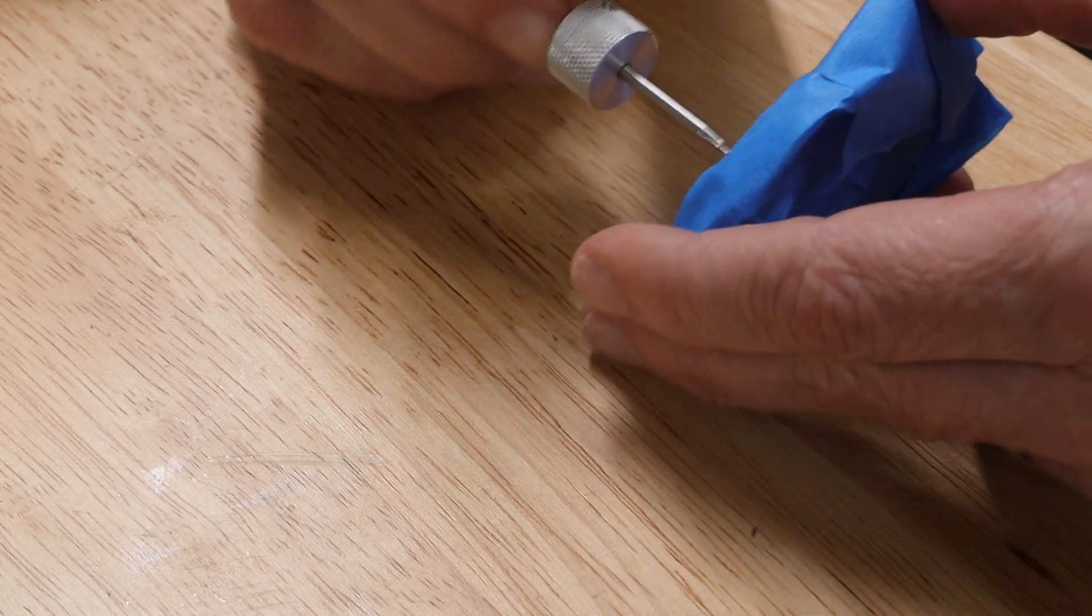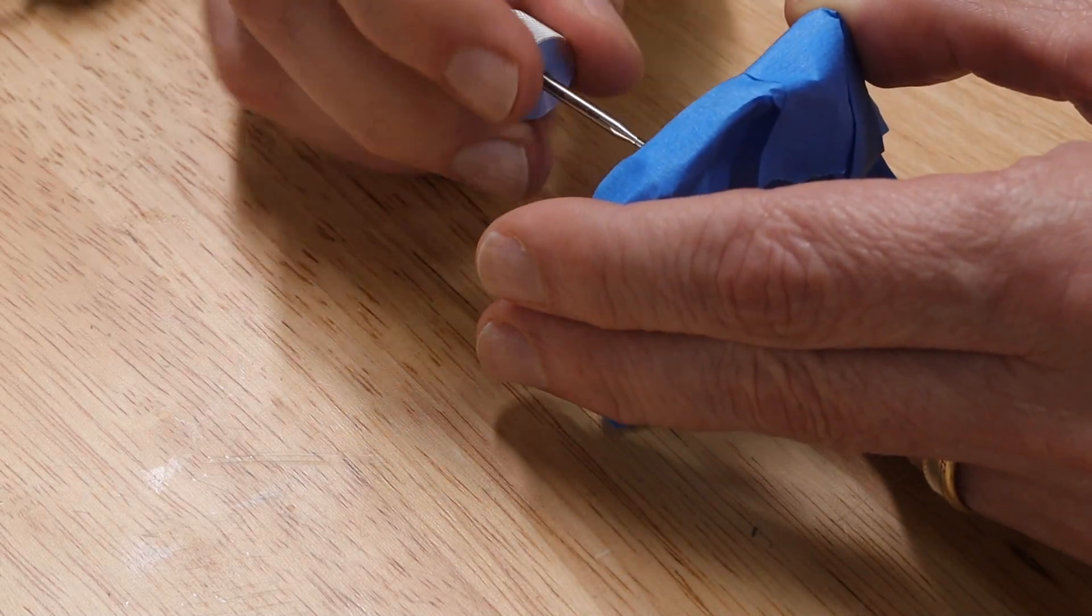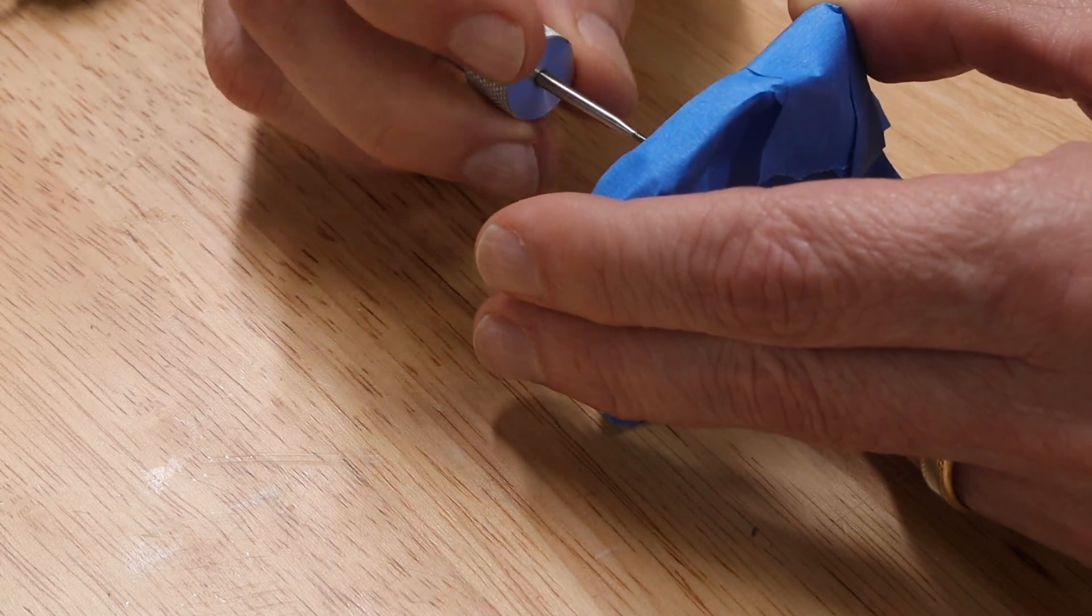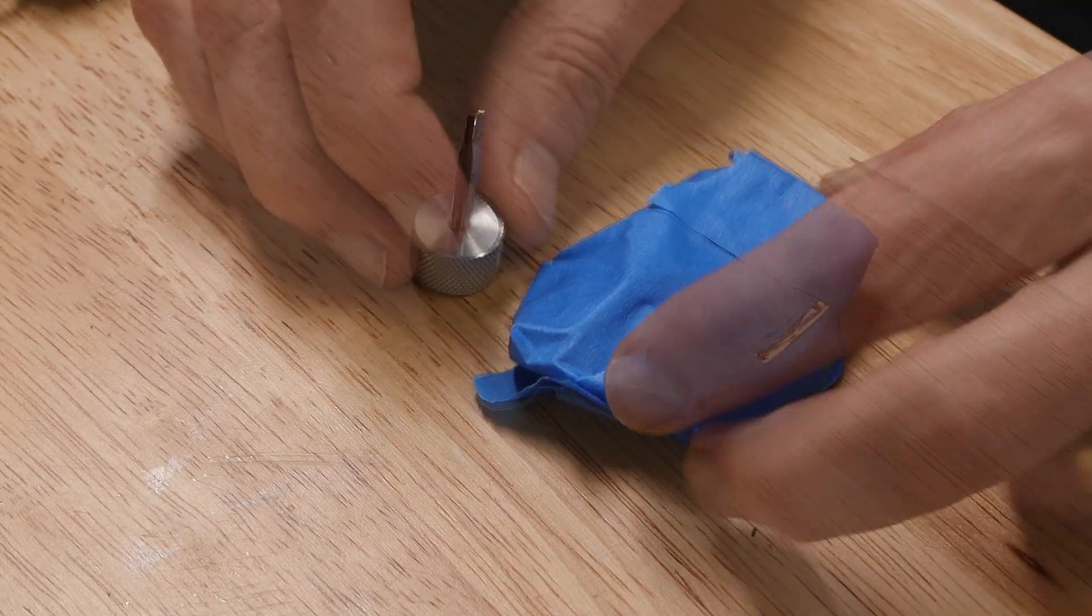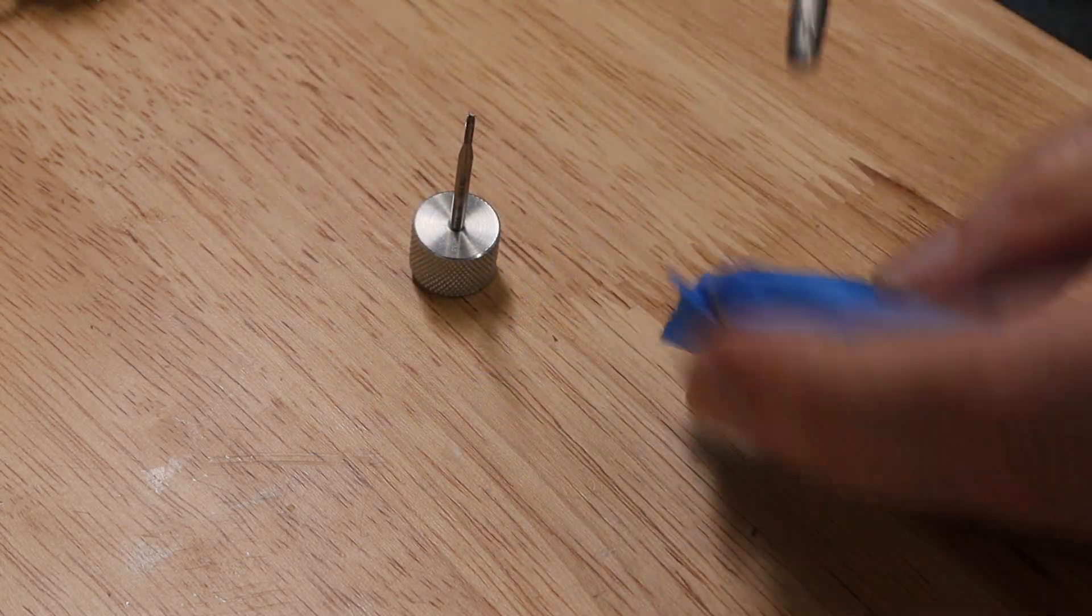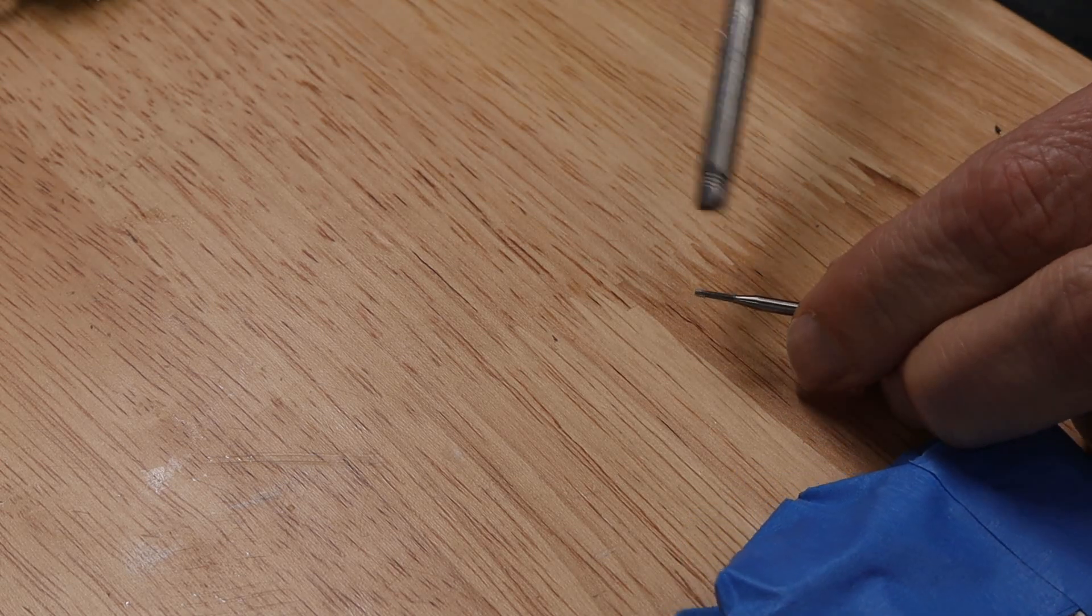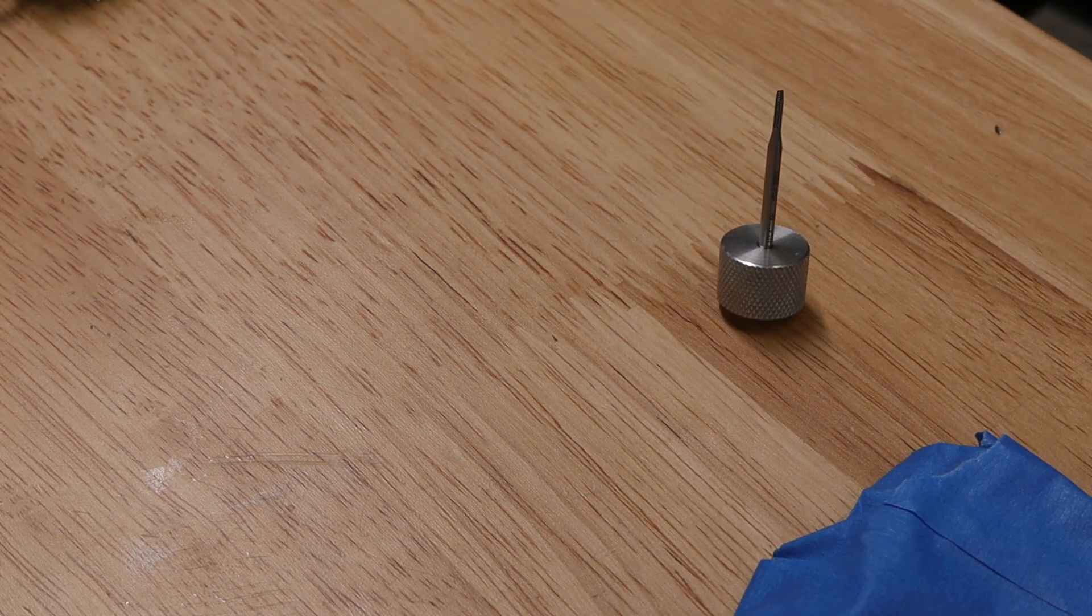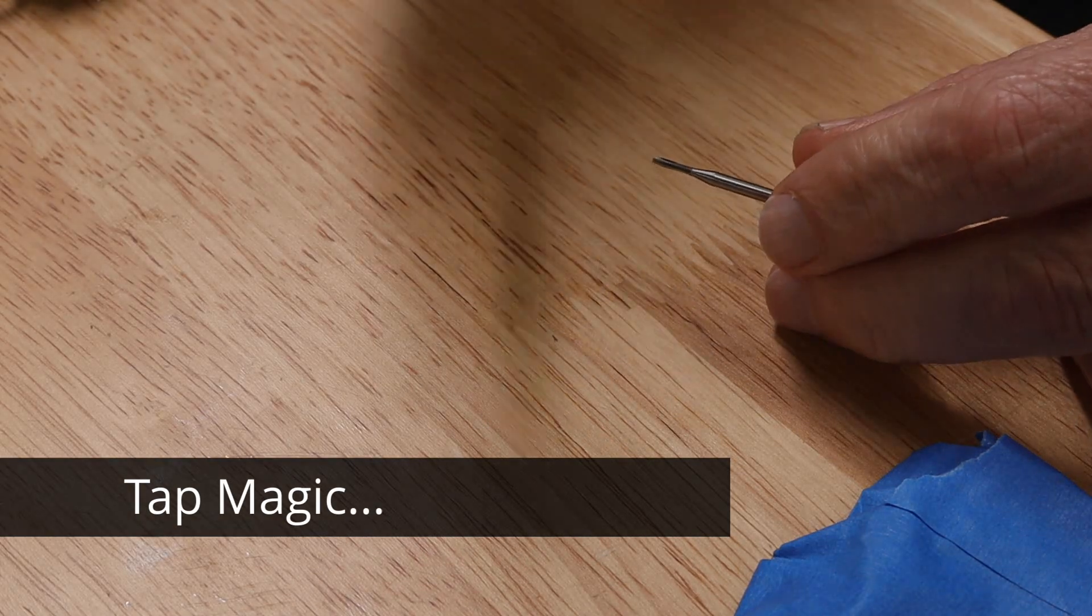Okay, so I could feel that it was bottoming out there, so I'll pull the tap out. And then I'll just blow it out with a little bit of air, and then blow this off with a little bit of air. It doesn't take much at all. And then some more LumiTap to make sure it's always well lubricated.